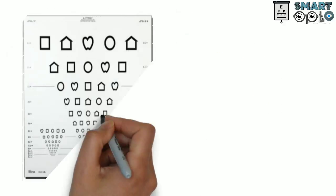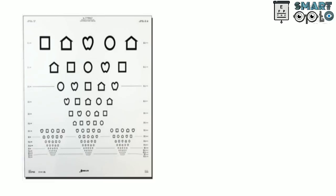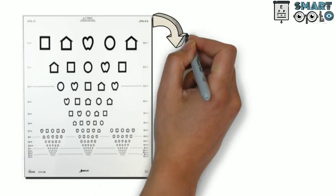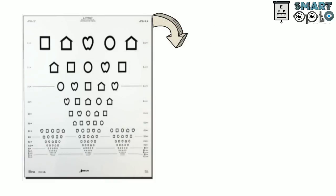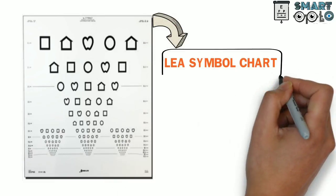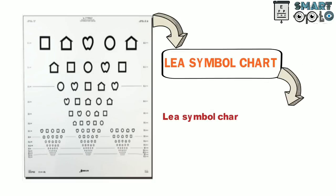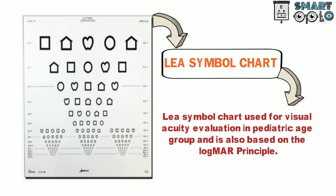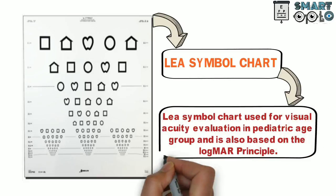This is an example of another visual acuity chart based on the LogMAR principles — the LIA symbol chart. The LIA symbol chart is used for visual acuity evaluation in the pediatric age group and is also based on the LogMAR principle.